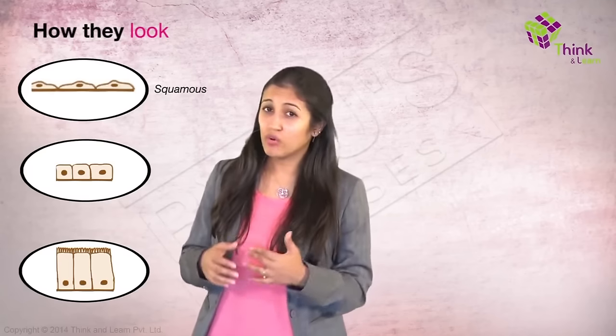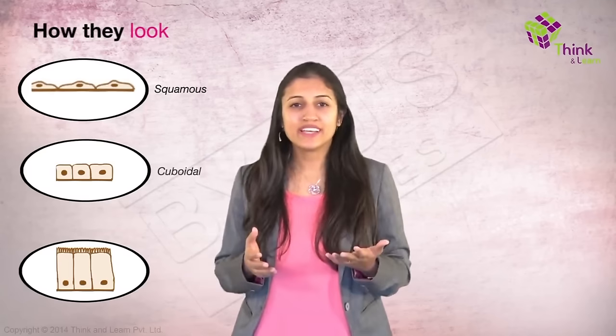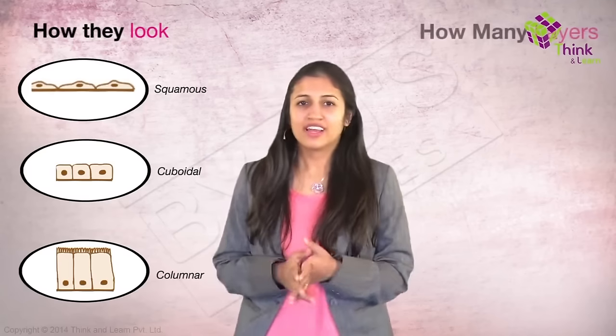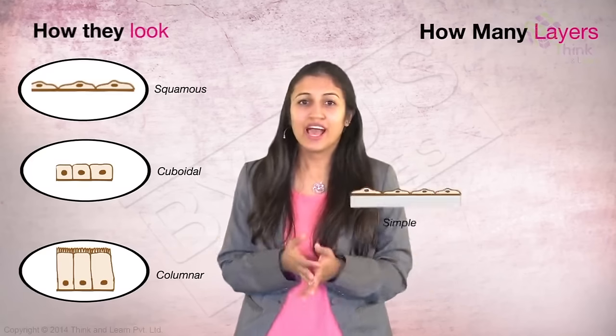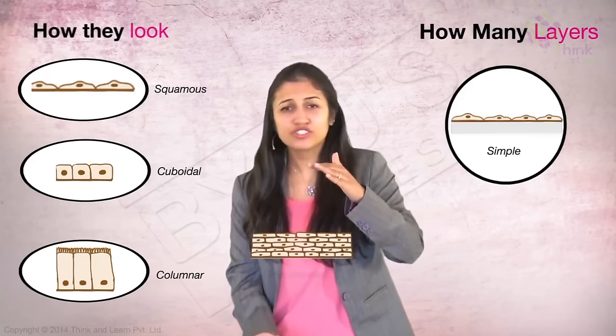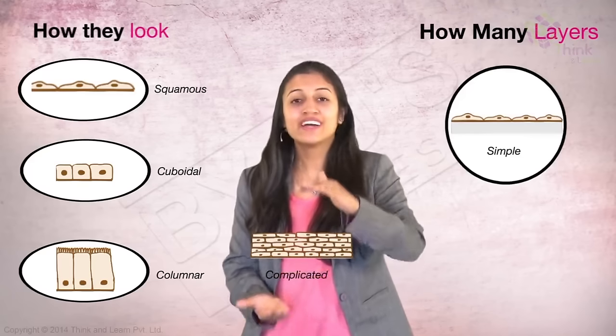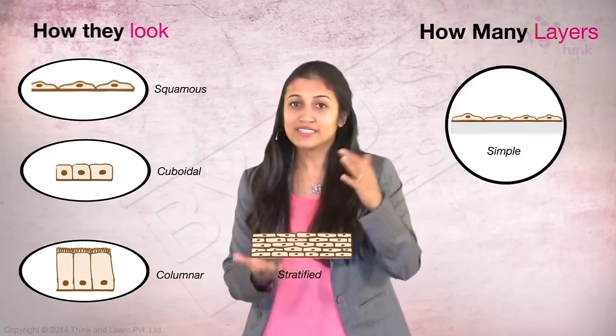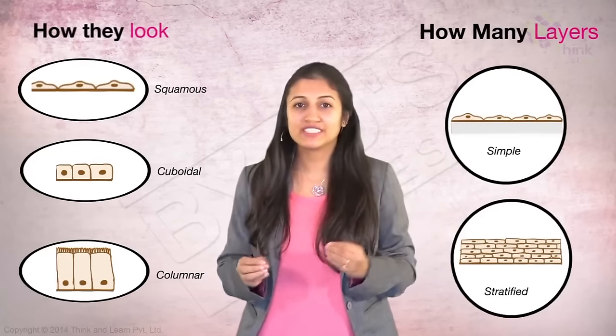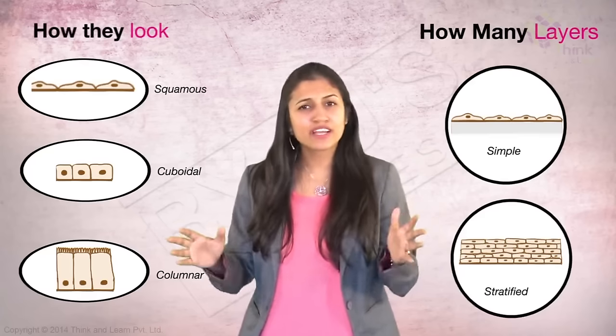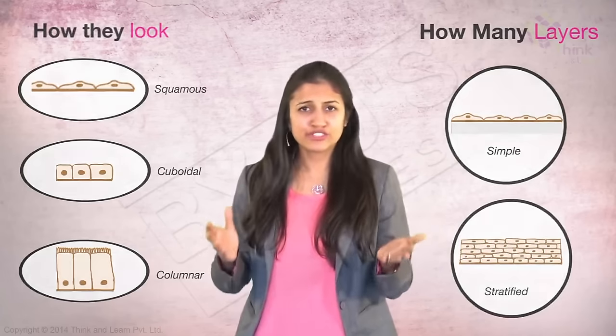The other two have very obvious names: cuboidal and columnar. Now, if you just put a single layer, it's called simple. And if you put many layers, it's called stratified. So, simple and stratified. Let's do some permutations and combinations, and then you have met every kind of epithelial cells there is to meet.